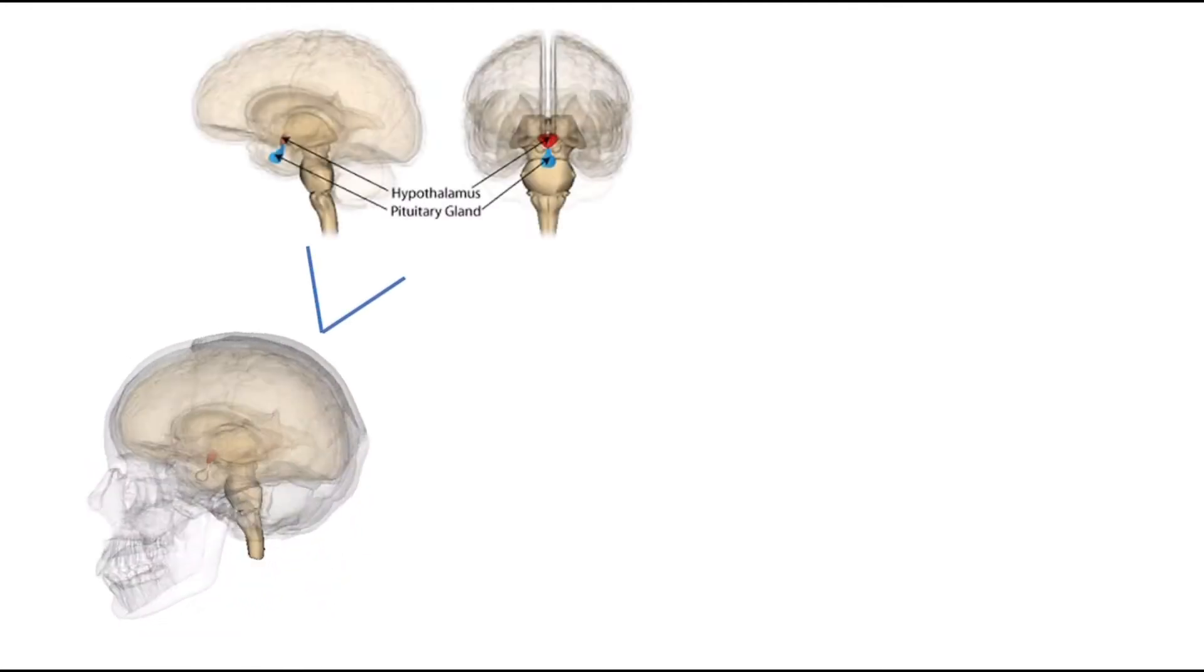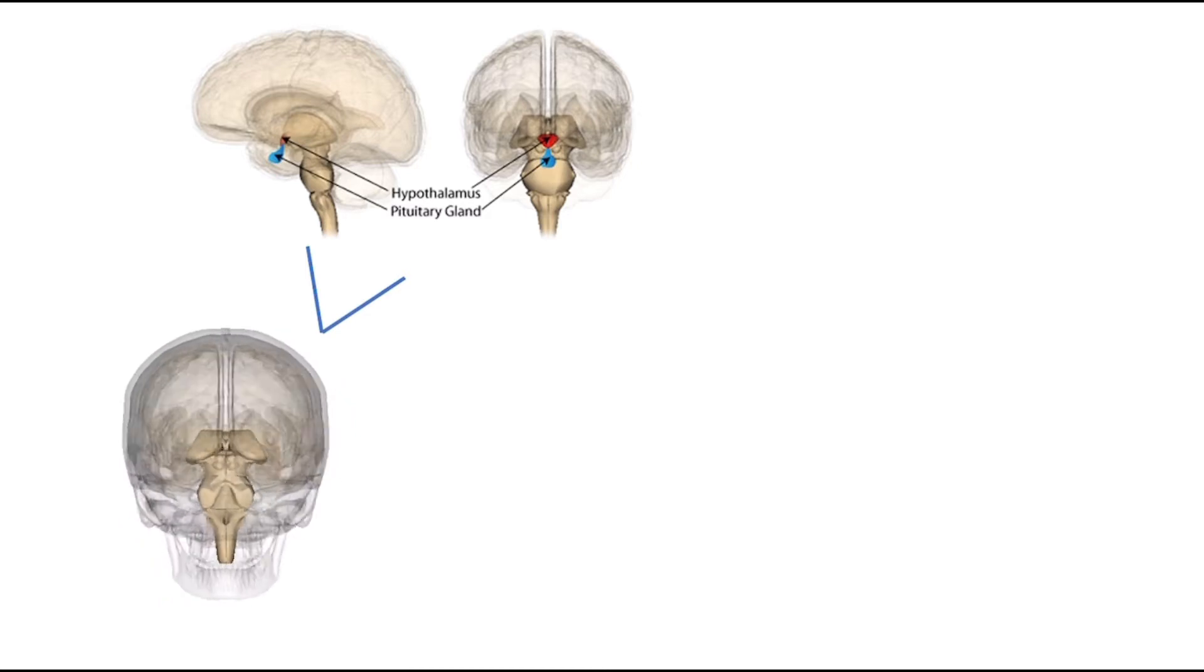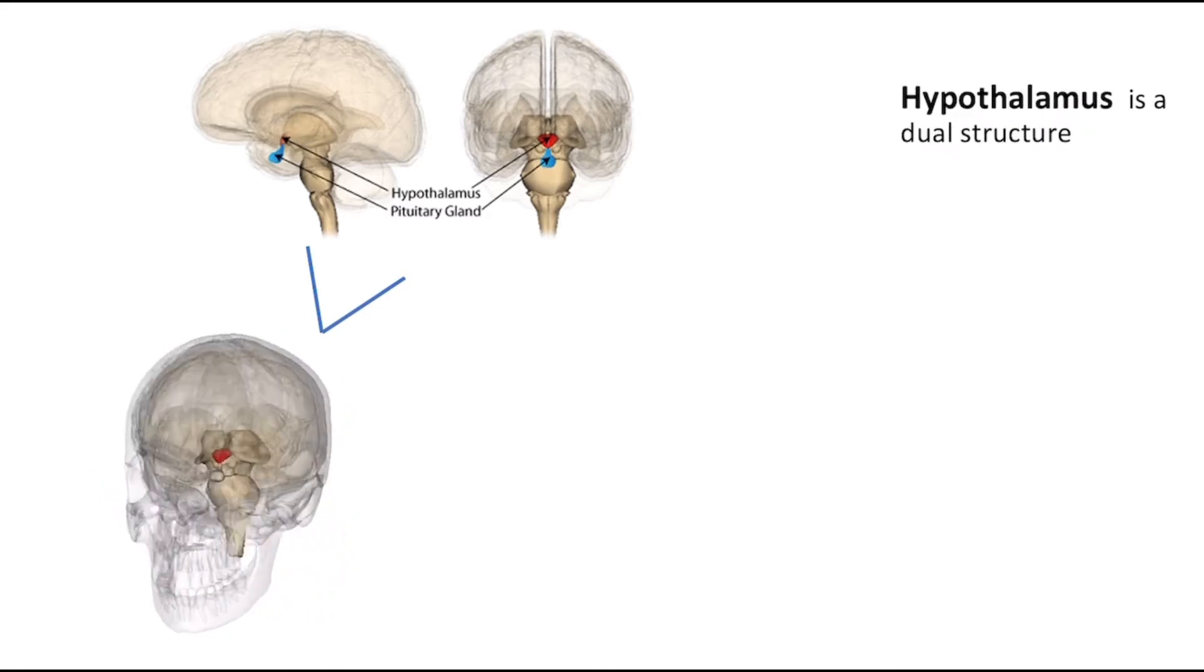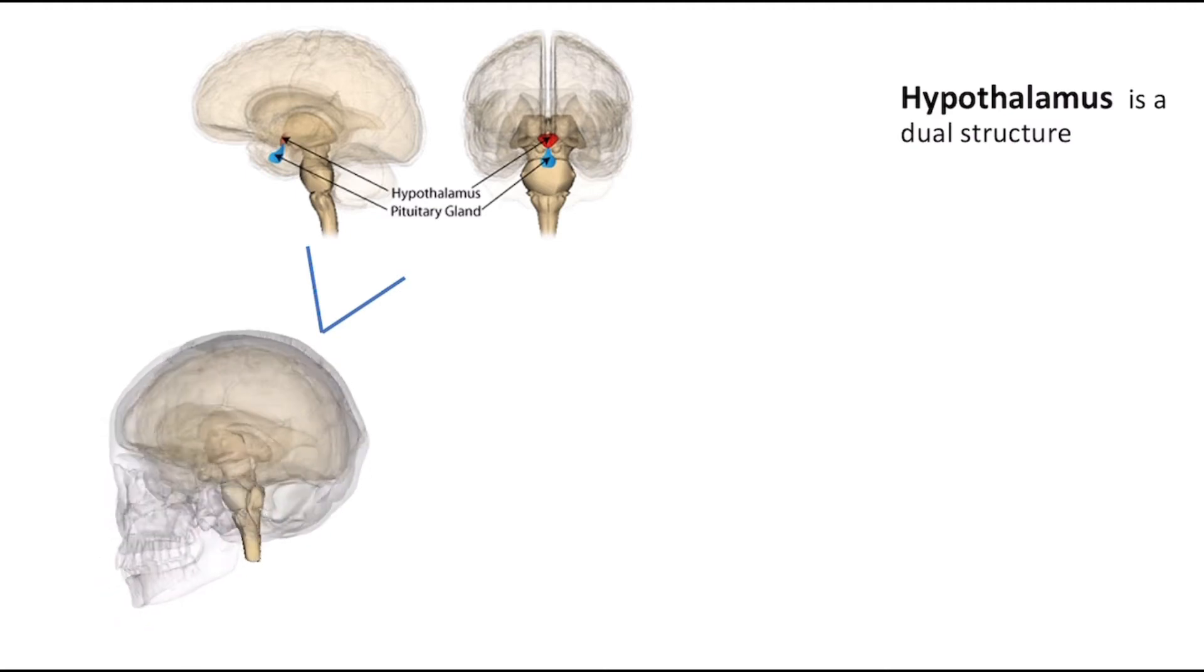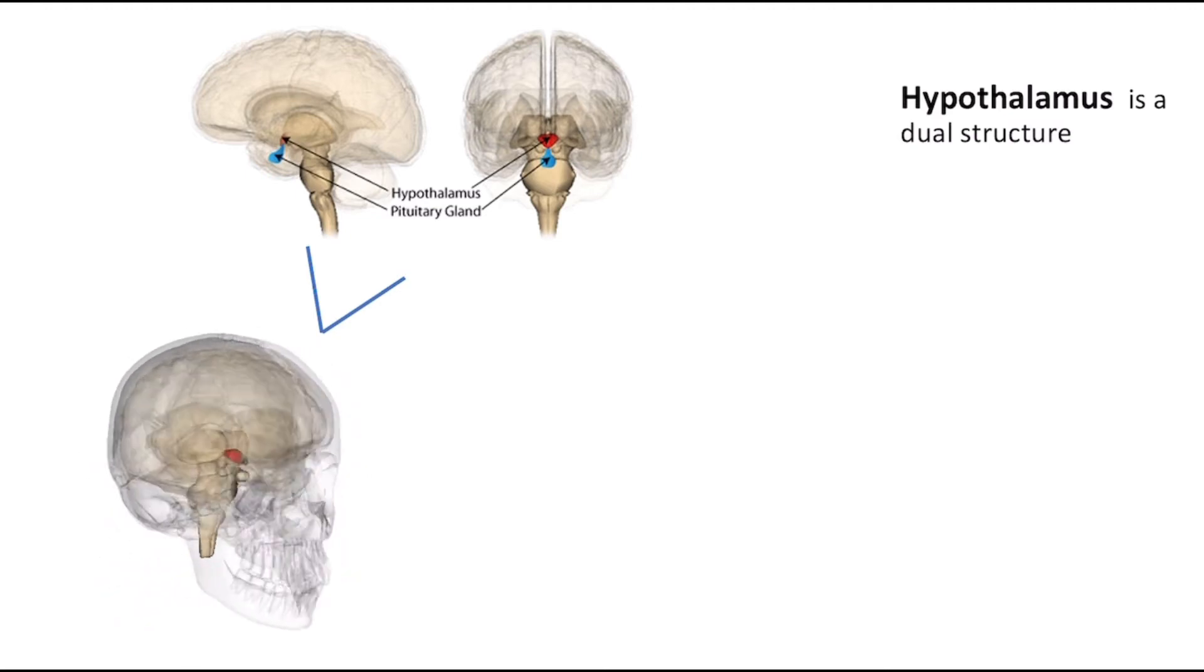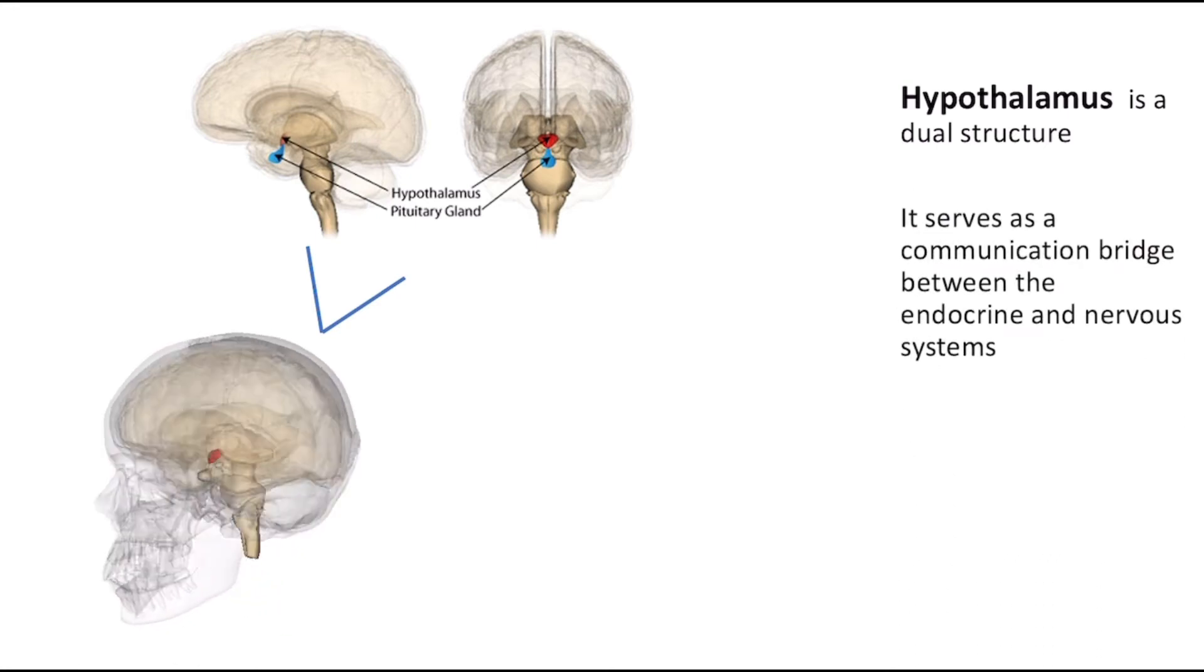Perhaps the most important structure in the endocrine system is the hypothalamus, which is located just below the thalamus and directly above the pituitary gland, which it controls. The hypothalamus is actually a dual structure as it is part of both the nervous and endocrine systems. In fact, the hypothalamus serves as a communication bridge between both systems.